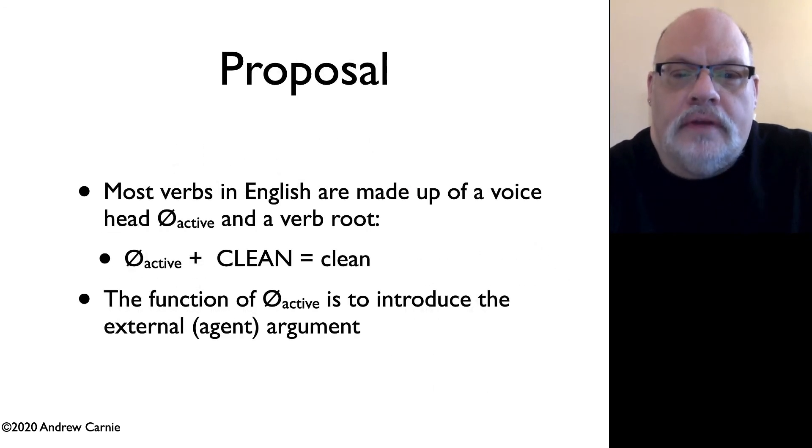So, here's our proposal. It should be familiar to you, because we have sort of suggested it before. English verbs are just the same as Turkish, Japanese, Yaki, and Malagasy verbs, and there is, in fact, a voice head. So, when you say the verb to clean, what you're doing is you're starting with some kind of root. We sometimes call these roots a-categorial, but that doesn't matter. It's some kind of root that's going to turn into a verb. And we attach a voice element to it, and we get the full verb. It just so happens that in English, this morphology is null. And the primary function of this head is to introduce external or agent arguments.